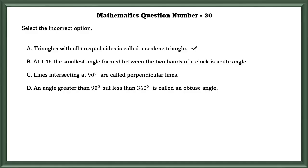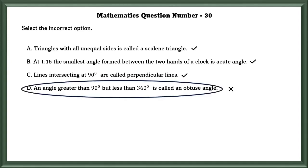Lines intersecting at 90 degrees are called perpendicular lines — yes, that is also correct. Option D states: an angle greater than 90 degrees but less than 360 degrees is called an obtuse angle. No, this is wrong. An angle greater than 90 degrees but less than 180 degrees is called an obtuse angle.